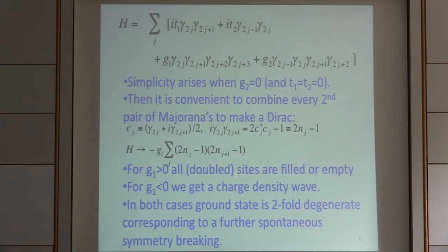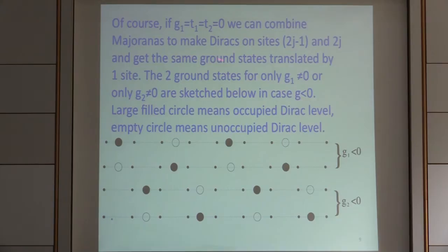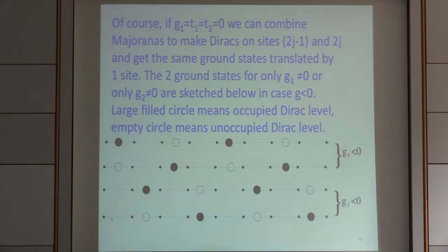By breaking the symmetry by hand and throwing away half the interaction terms, we discover a second spontaneous symmetry breaking with a two-fold degenerate ground state. If instead we have G2 nonzero, we get basically the same picture except now we combine Majoranas to make Diracs on sites 2j-1 and 2j. The most important thing is it takes two Majoranas to make a Dirac. The little dots represent the original lattice sites and the big circles represent how we've combined pairs of Majoranas to make a Dirac.